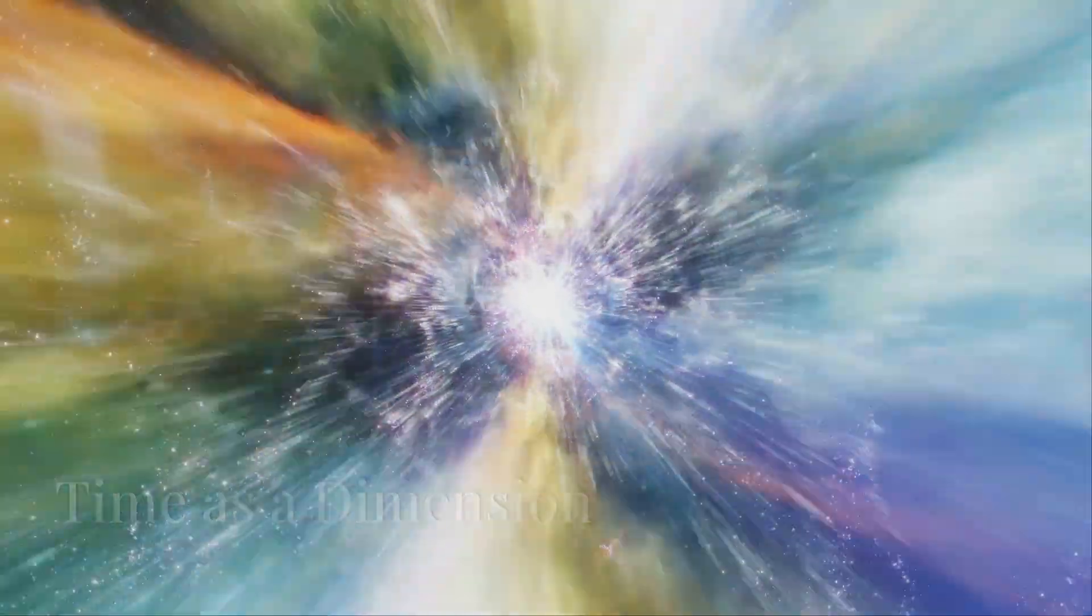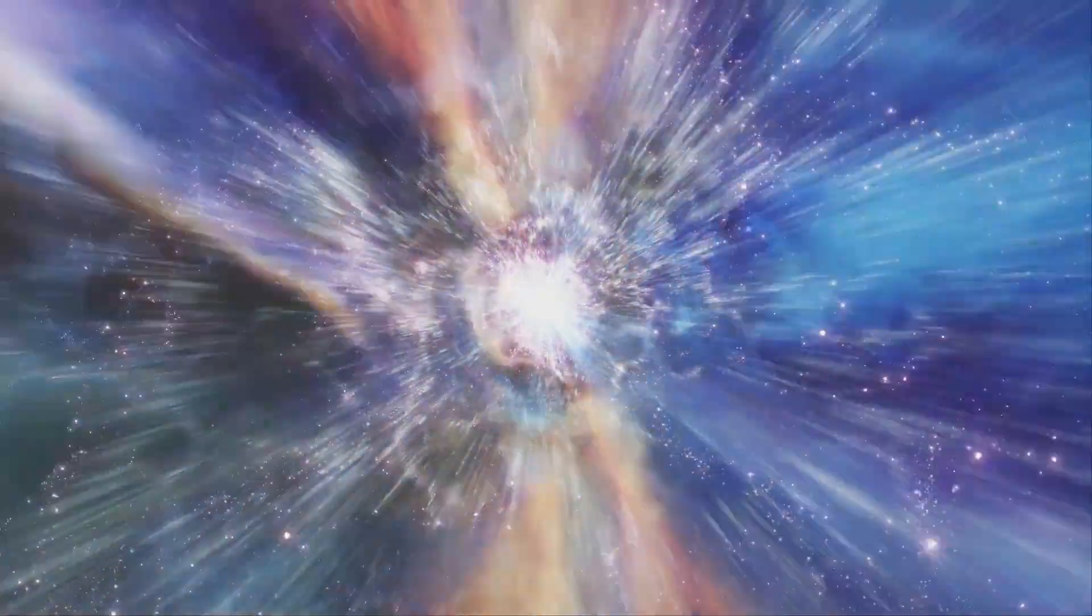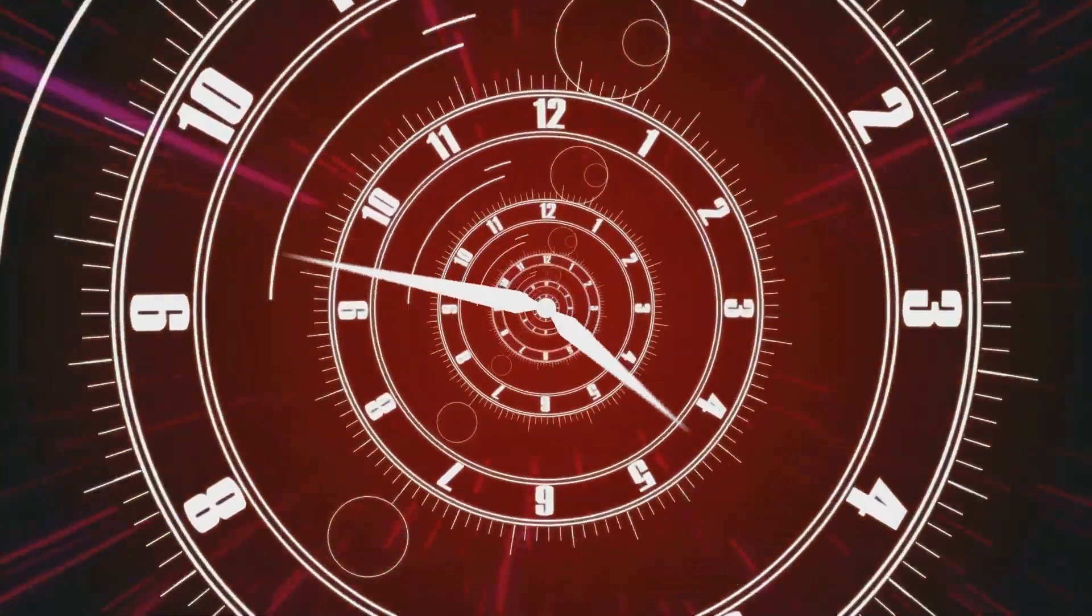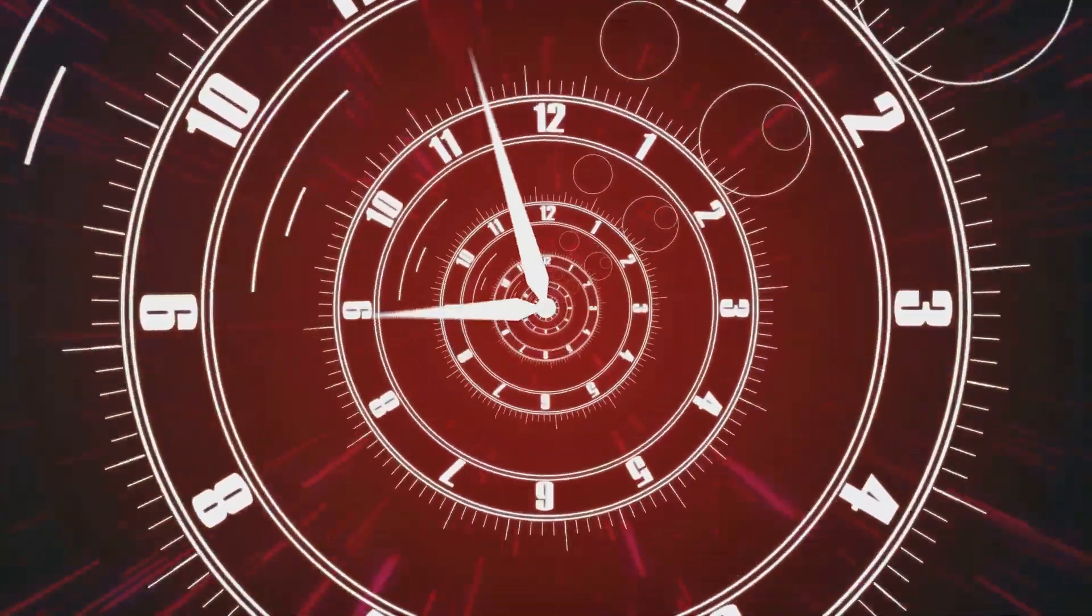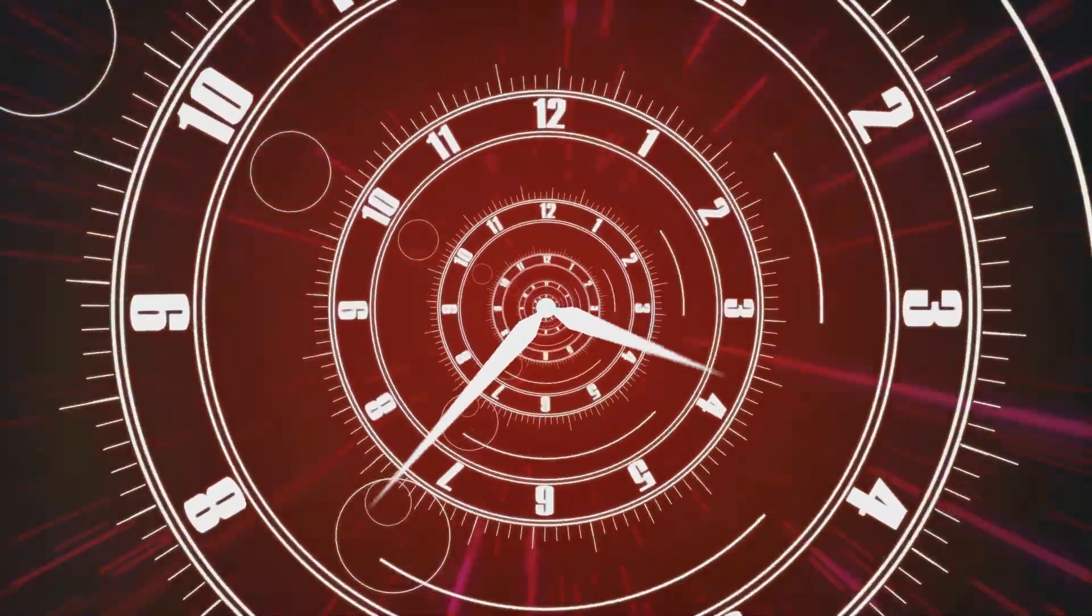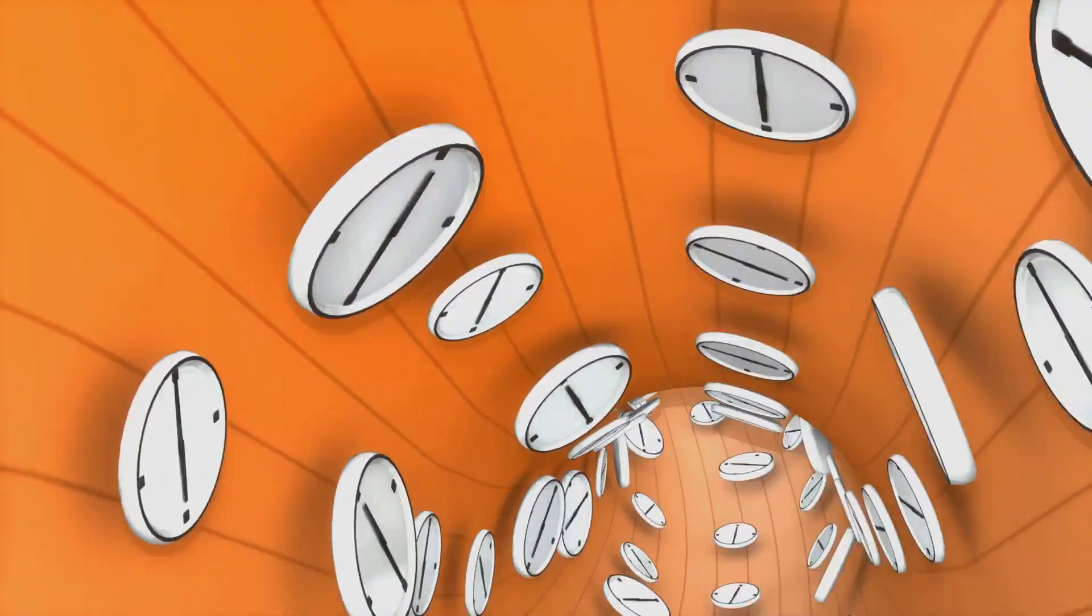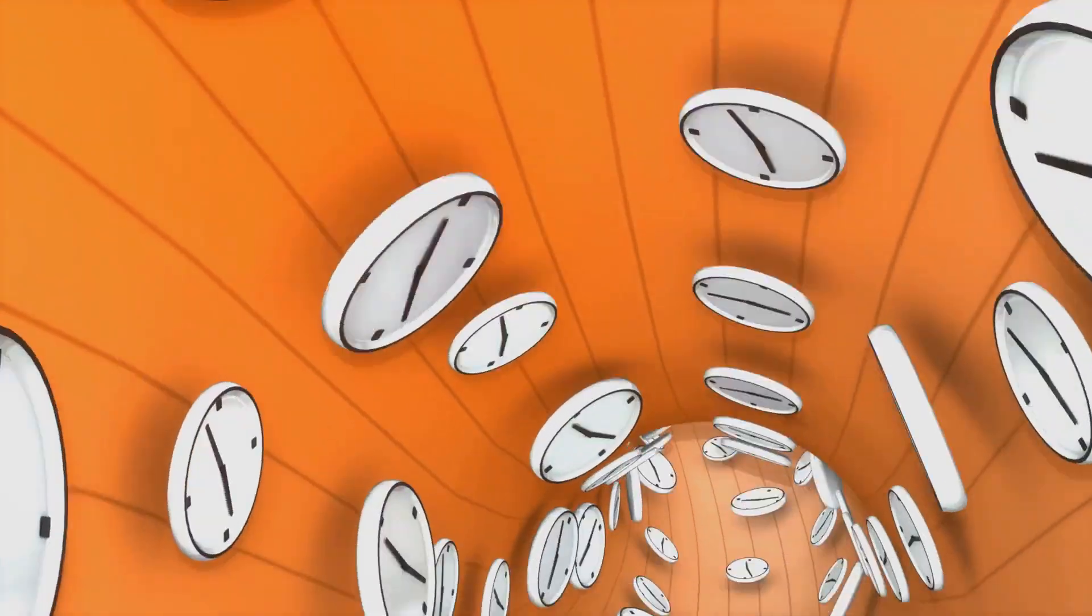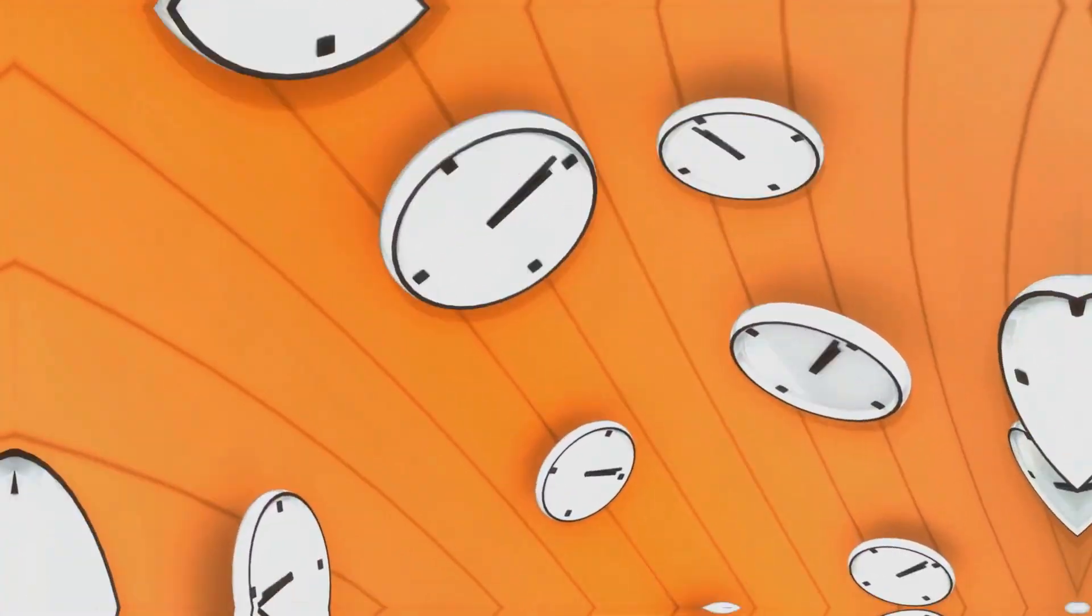In the block universe theory, time is viewed as a dimension rather than a flow. This means that time is seen as being similar to the three spatial dimensions we're familiar with. Imagine time as a direction you can move through, just like you can move left, right, up, or down in space. In this view, events don't happen and then fade into the past. Instead, all events—past, present and future—exist simultaneously at different points along the time dimension.